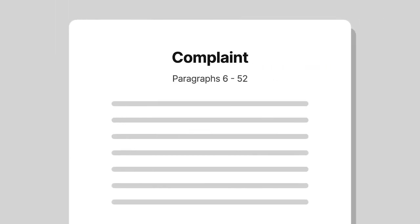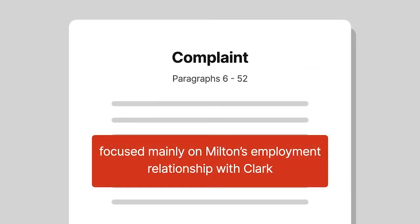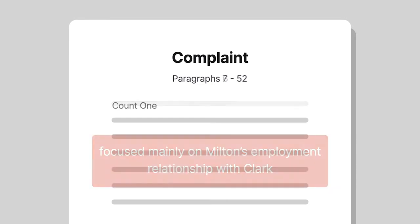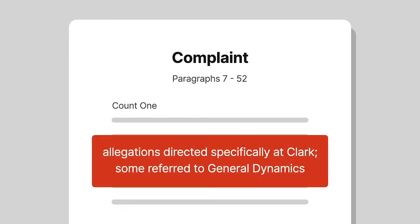Paragraphs 6 through 52 of Milton's complaint focused mainly on Milton's employment relationship with Clark. All of the allegations in paragraphs 7 through 52 were underneath a heading labeled Count 1, which was directed specifically at Clark.